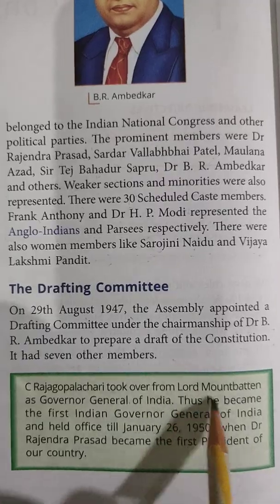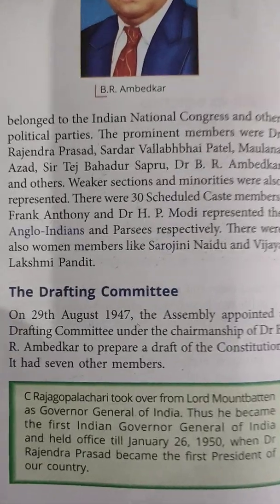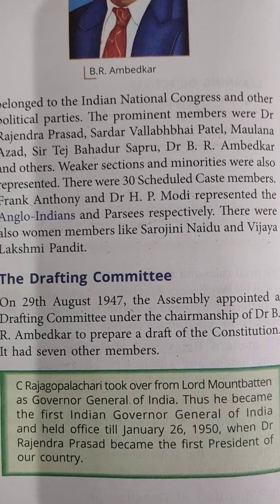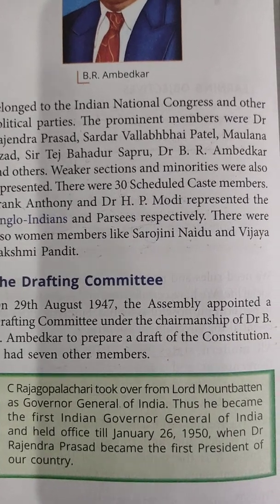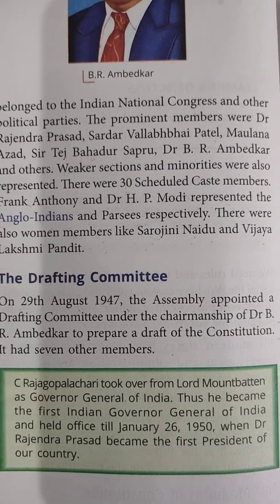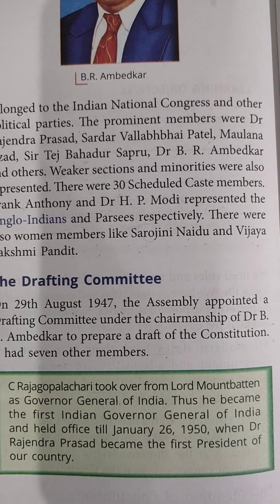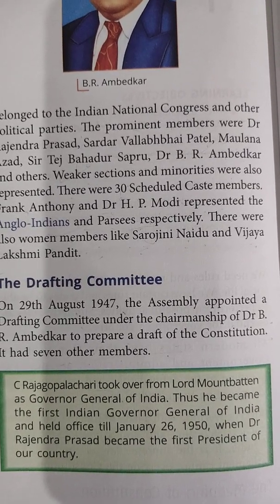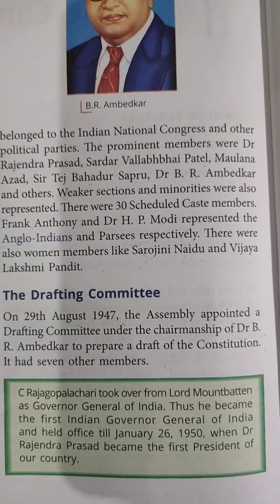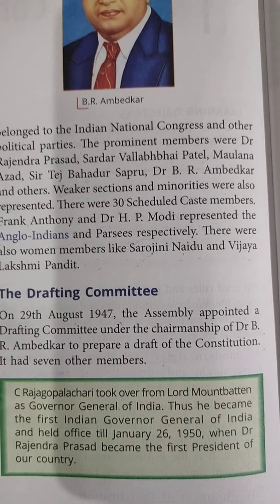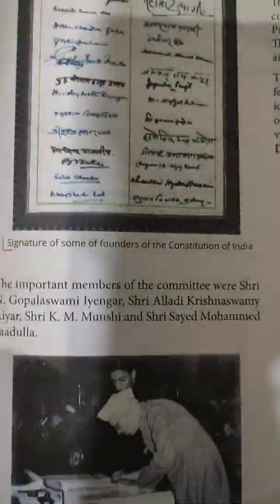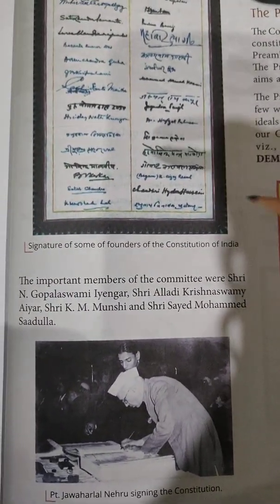Sri Rajagopalachari took over from Lord Mountbatten as Governor General of India. When the British were governing us, we had the Governor General from the British side. Lord Mountbatten was the last British Governor General. After him, an Indian, Sri Rajagopalachari, became the Governor General of India — the first Indian Governor General — and held office till January 26th, 1950. After that, Dr. Rajendra Prasad became the first President of our country.